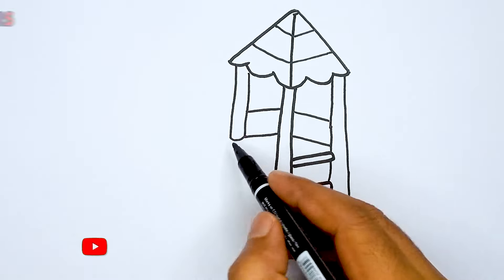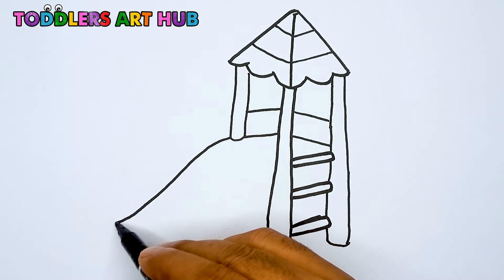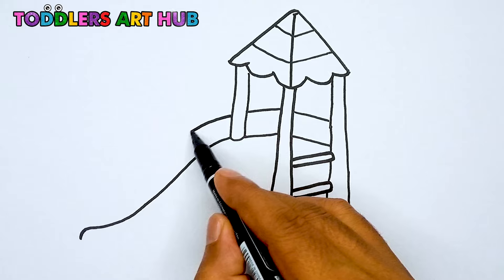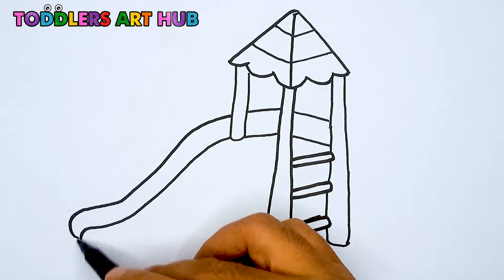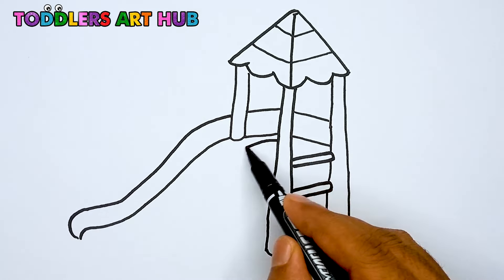Awesome! Time to draw the slider. Starting from the bottom of the roof, draw a curved line going down to the left. Make it nice and smooth.